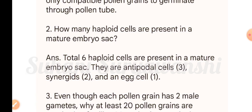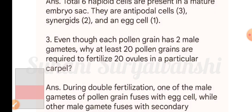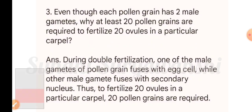Six haploid cells are present in a mature embryo sac: antipodal cells (three cells), synergids (two cells), and an egg cell. Question three: even though each pollen grain has two male gametes, why are at least 20 pollen grains required to fertilize 20 ovules in a particular carpel?